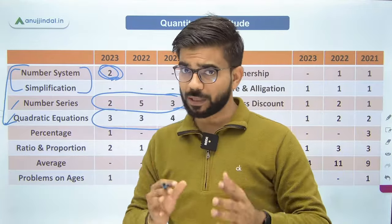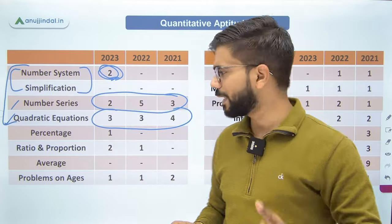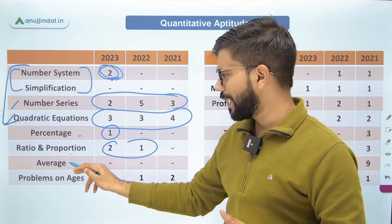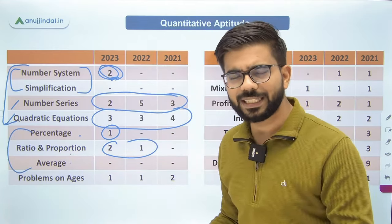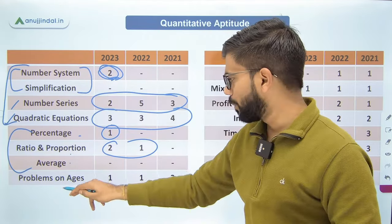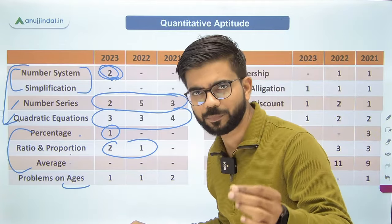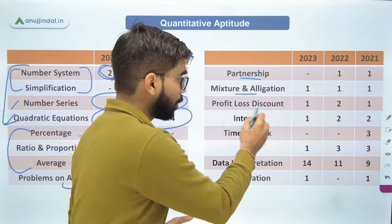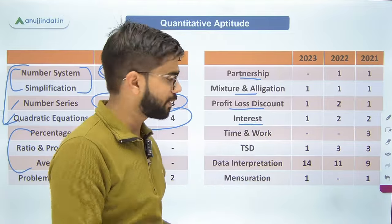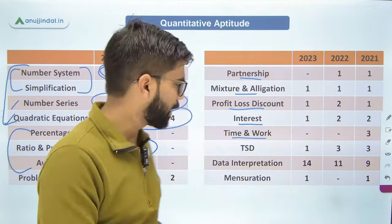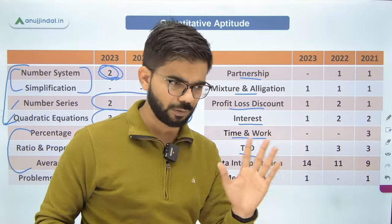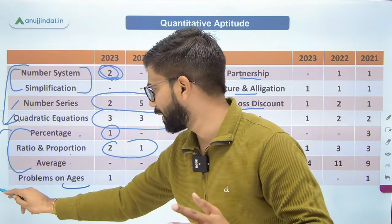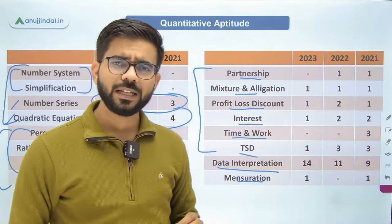In Quant there are 30 questions and you get 25 minutes. Then percentage — only one question was asked from it. Percentage and ratio proportion are connected. Basic arithmetic includes percentage, ratio proportion, and average. Advanced arithmetic topics from which many questions are asked include: problems on ages, partnership, mixture and allegation, profit and loss, discount — very very important — simple interest, compound interest, time and work (which includes pipes and systems), and time speed distance (which includes boats and streams).